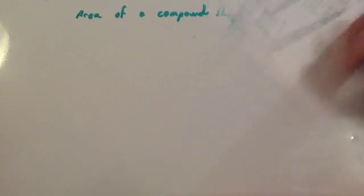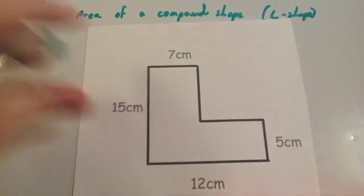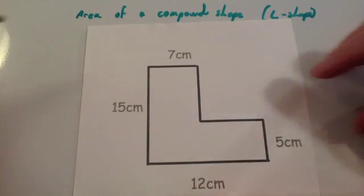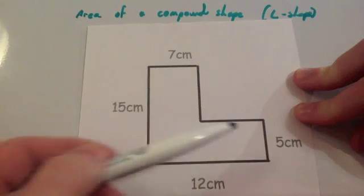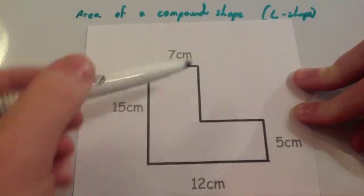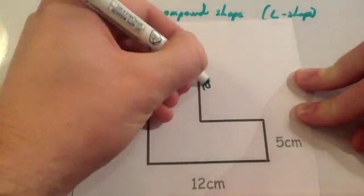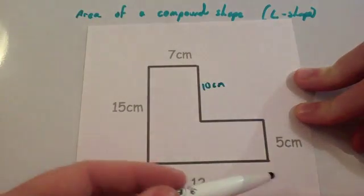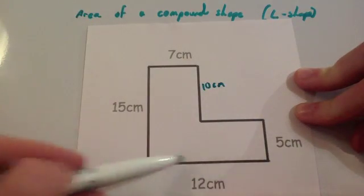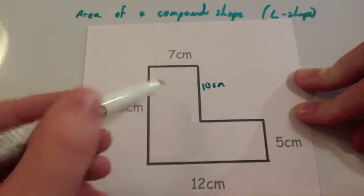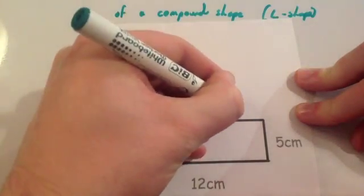Let's have a look at another example. Okay, so here we've got another question. We've been asked to find the area of this compound shape. So the height of the whole thing is 15cm and the height of this part is 5, so therefore this length here is going to have to be 10cm. The whole way across the bottom is 12. This part here is 7, so therefore this length is going to have to be 5cm.